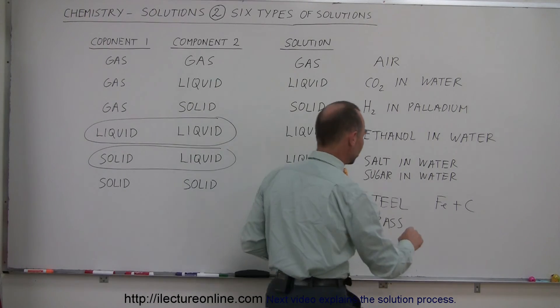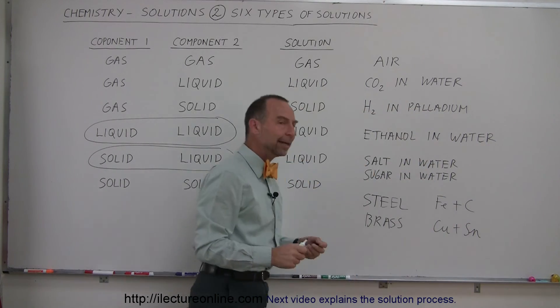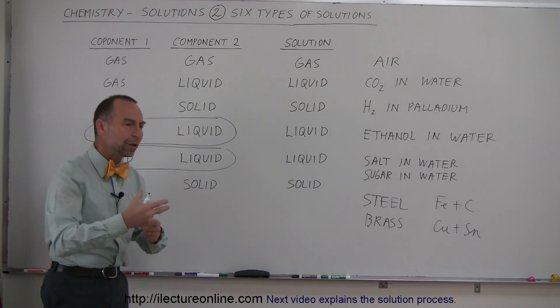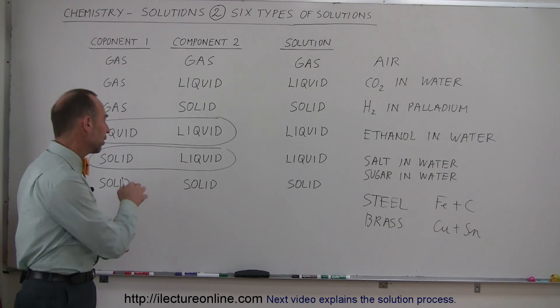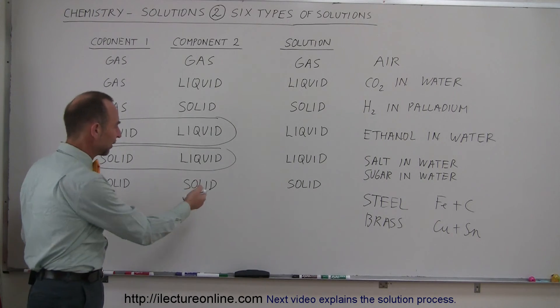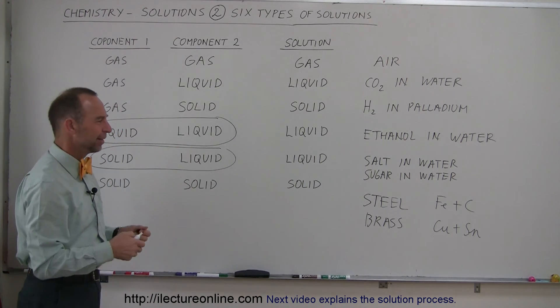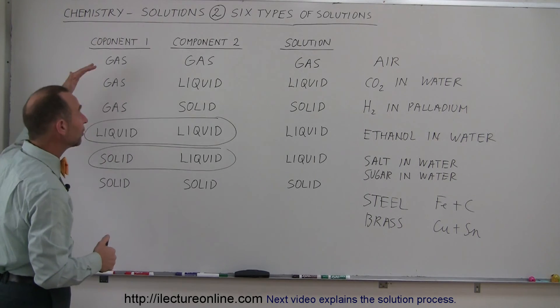Brass is typically a mixture of copper and tin. And again, you do that in liquid state, and then when you solidify them, it's a homogeneous mixture of the two. So we call that also a solution. Typically, once in the solid state, it's hard to think about something like that being a solution. But nevertheless, we have to consider all six types.